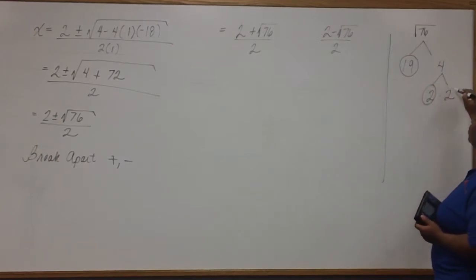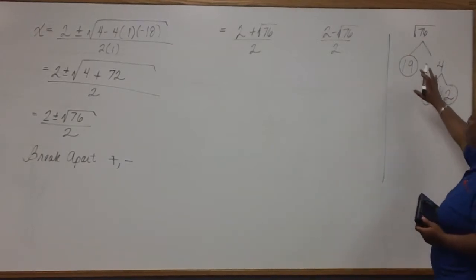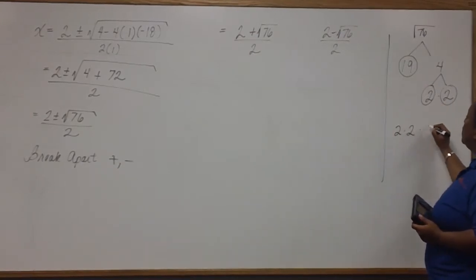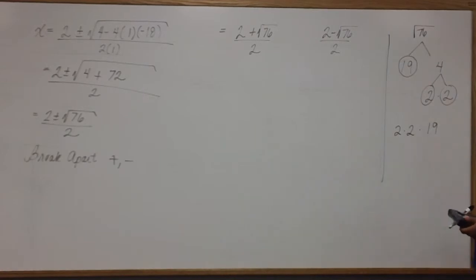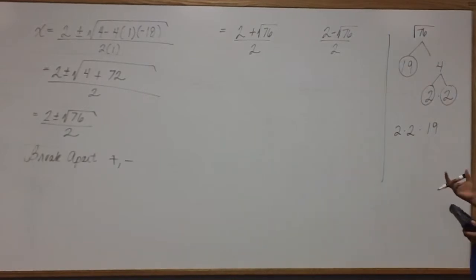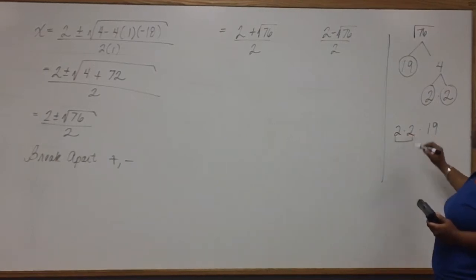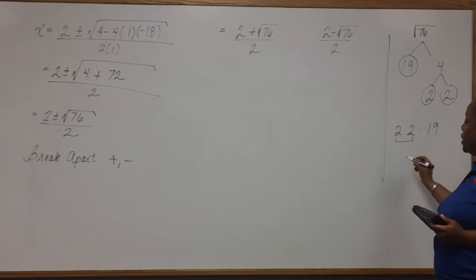And since 2 is prime, we're finished with the prime factorization. And it's 2 times 2 times 19. Now we're looking for two numbers that are the same, which we have here. So what this means is, we can take out a 2.